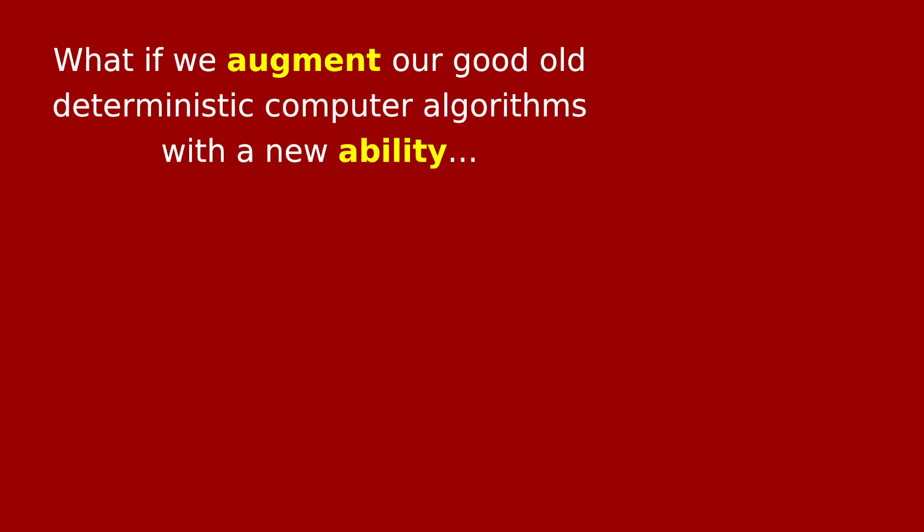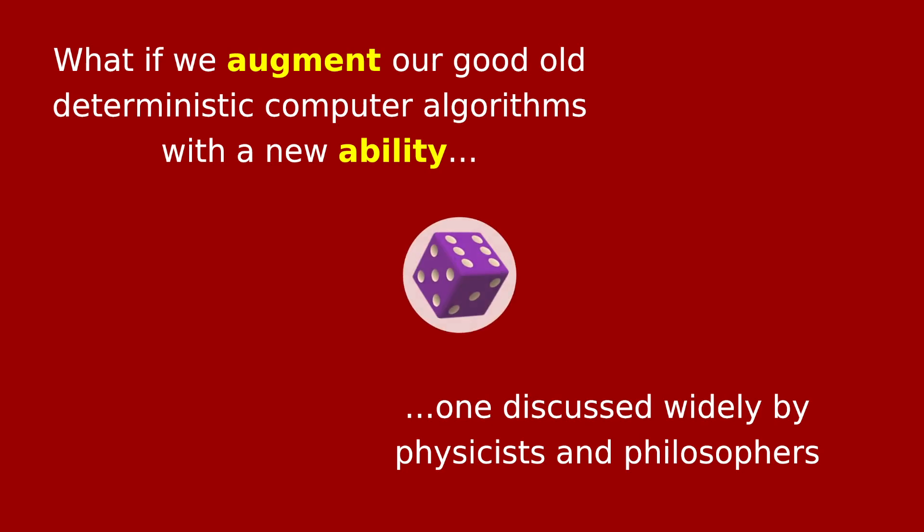A while back, some theoretical computer scientists and physicists had a really cool idea. What if we were to augment our good old deterministic computer algorithms with a new ability, one that's discussed widely by physicists and philosophers? This new ability I refer to is, of course, randomness.